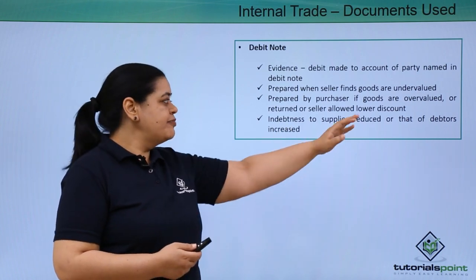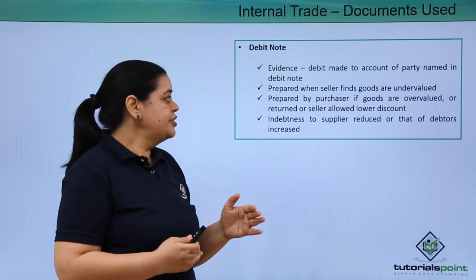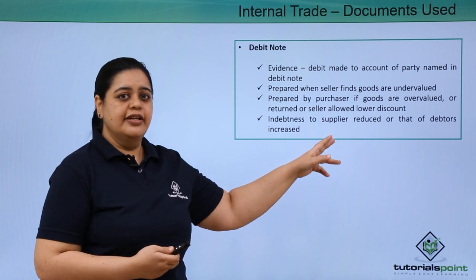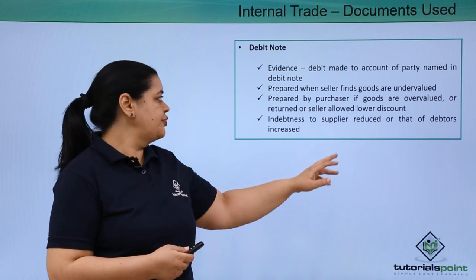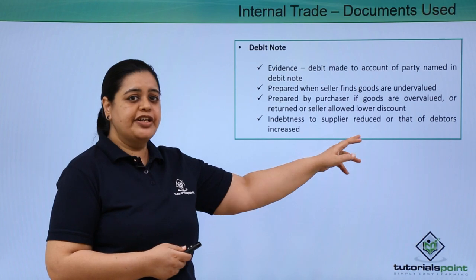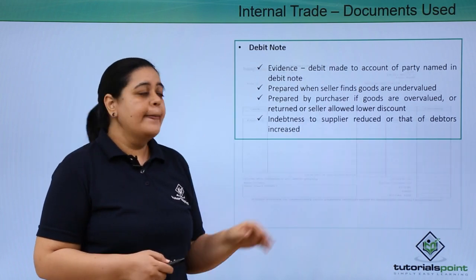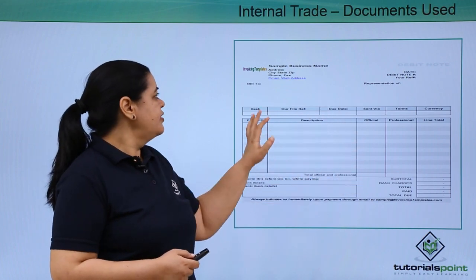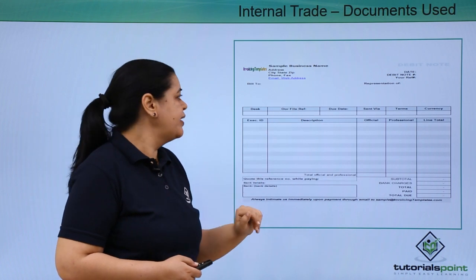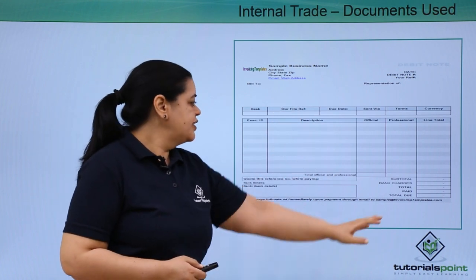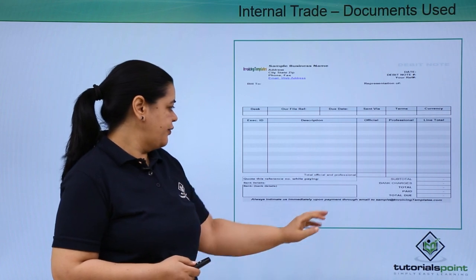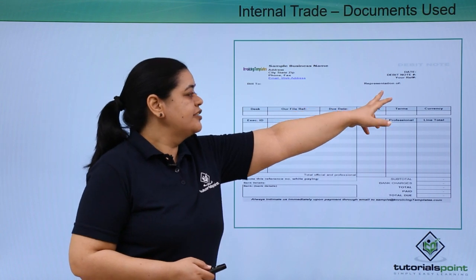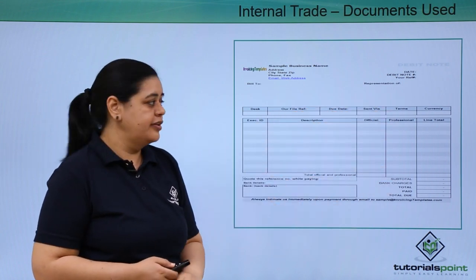If the purchaser thinks the goods are of a different quality and hence overvalued, or if he returns the goods or thinks they need to be repriced, he will issue a debit note. The debit note shows that the indebtedness to the supplier is either reduced or increased depending on the condition under which it is issued. The sample includes the name of the person, description of goods, total amount, date, debit note number, and bank charges if applicable.